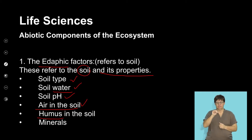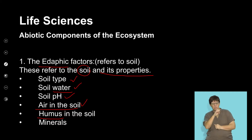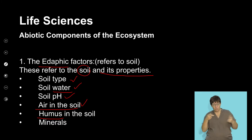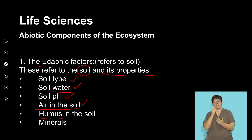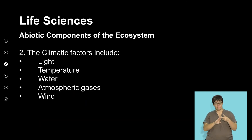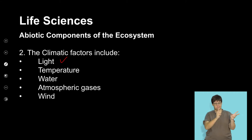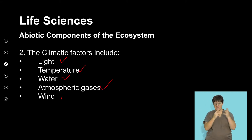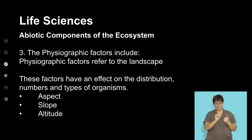Humus of the soil refers to the organic content of soil. The greater the humus content, the greater the fertility of the soil, as well as the minerals present in soil. When we look at the climate, we're going to look at light, temperature, water, the atmospheric gases, as well as wind, and how they influence living organisms.